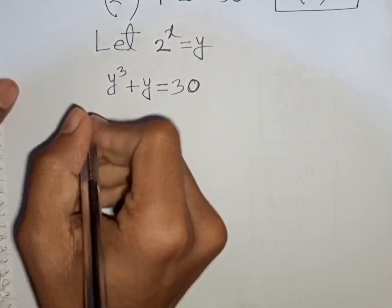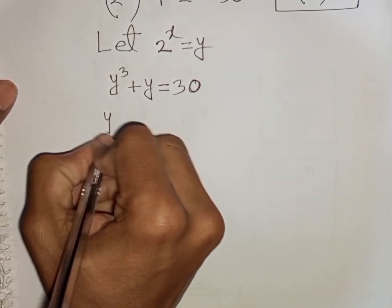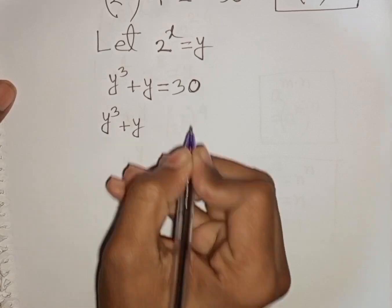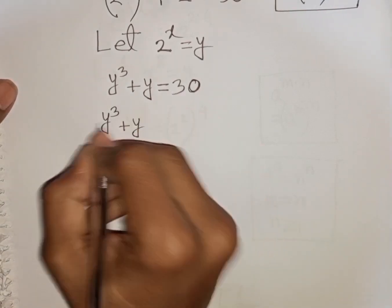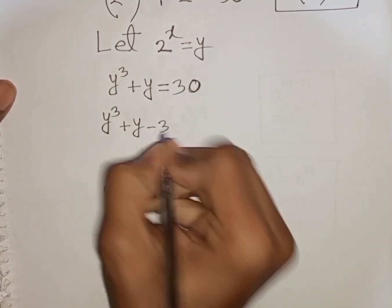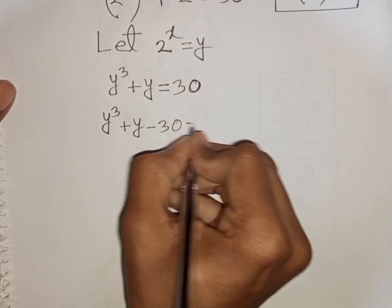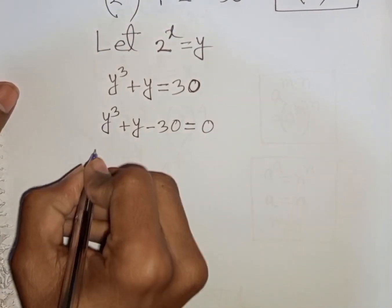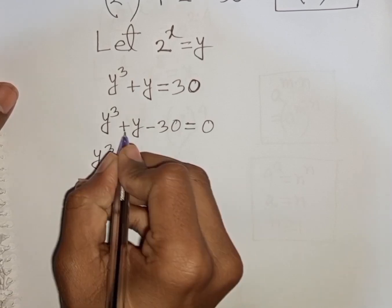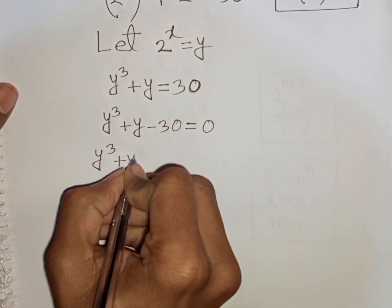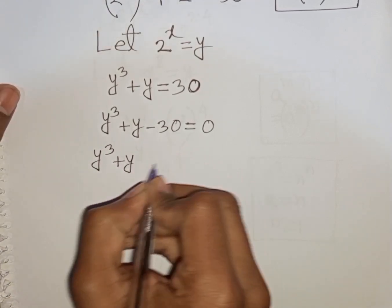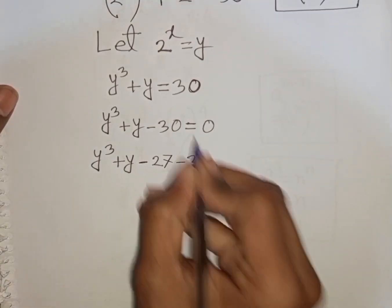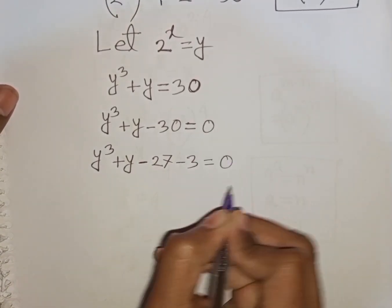Now I can write here y cubed plus y, then taking 30 to the left side, this will be minus 30, is equal to 0. Now we have y cubed plus y minus 30, which can be written as minus 27 minus 3, is equal to 0.